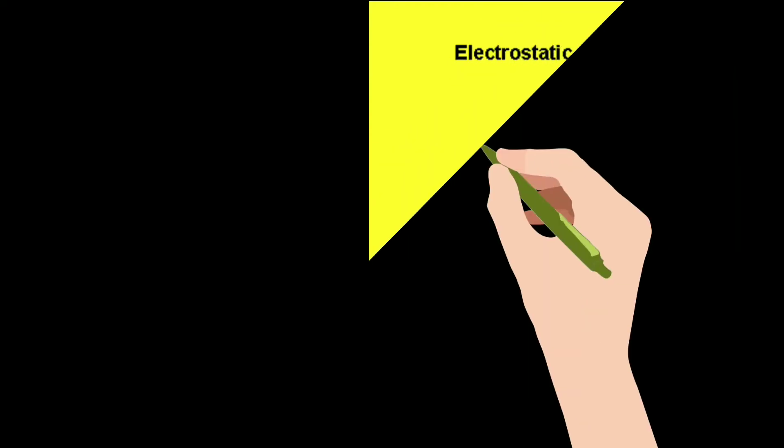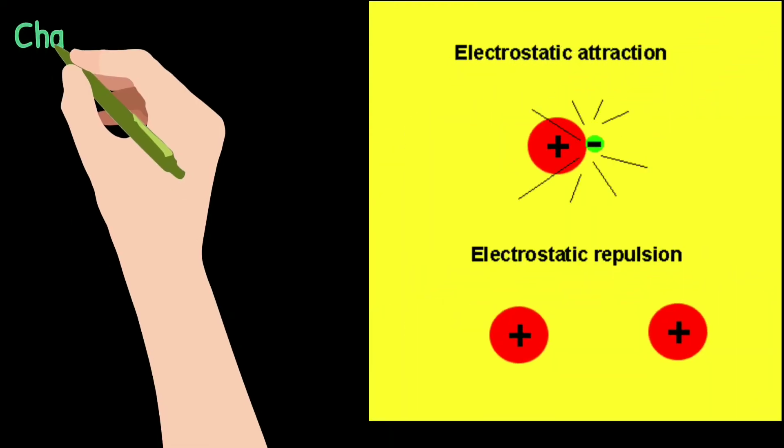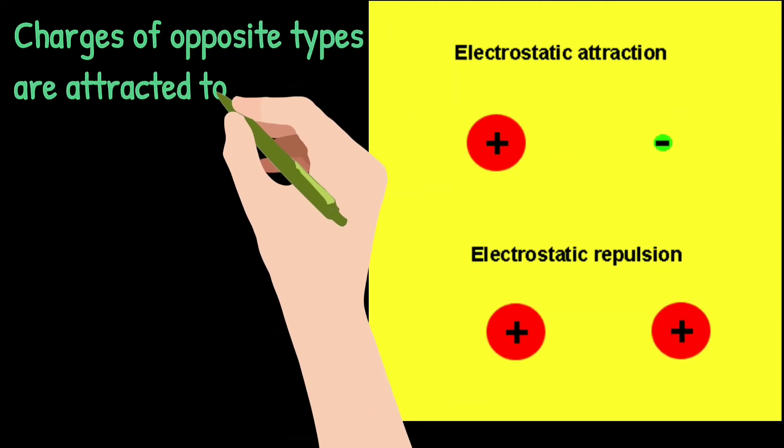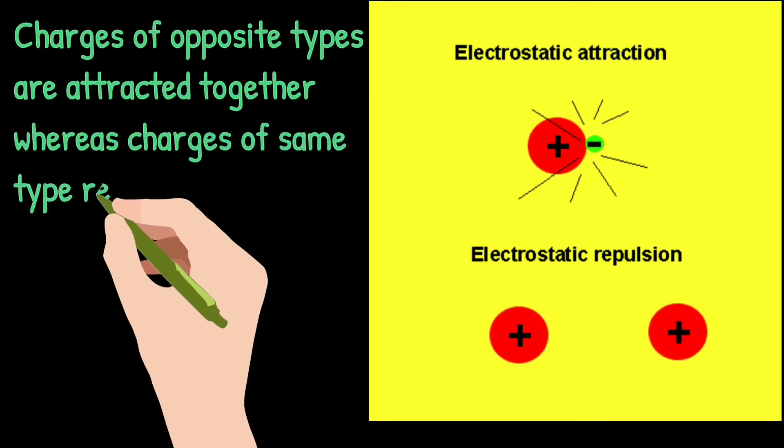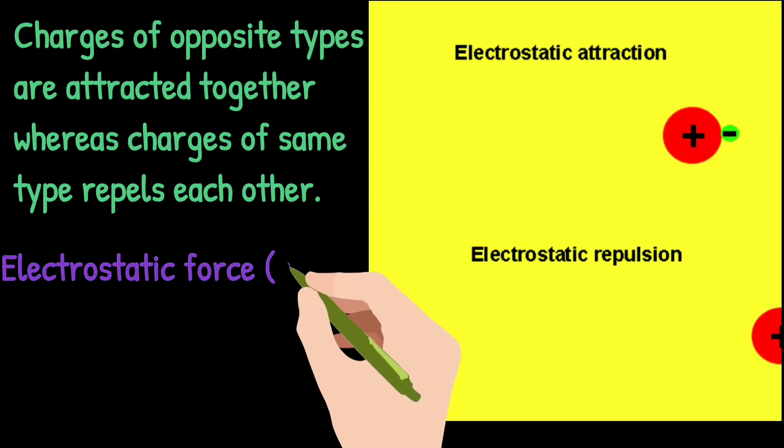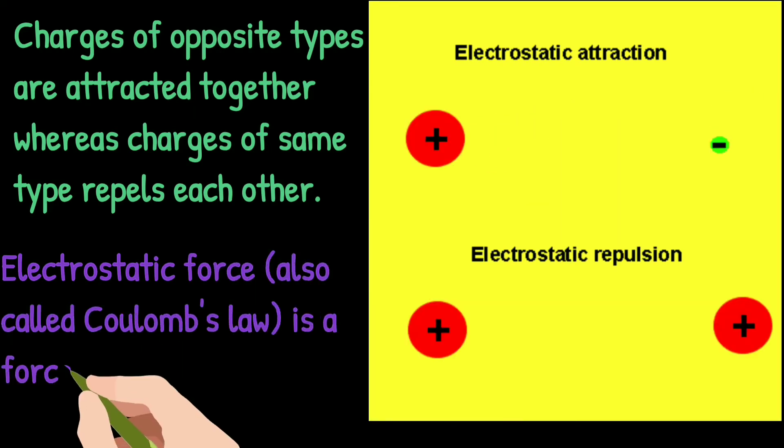Charges of opposite type are attracted together, for example positive and a negative charge, whereas charges of same type repel each other - negative-negative or positive-positive charge. This is called electrostatic force, also called Coulomb's law. It is a force that operates between charges.